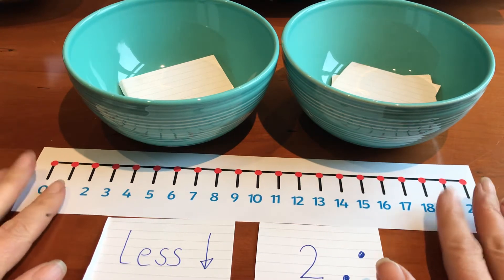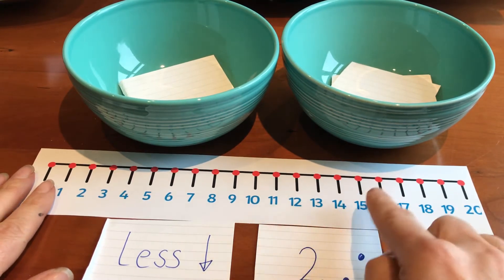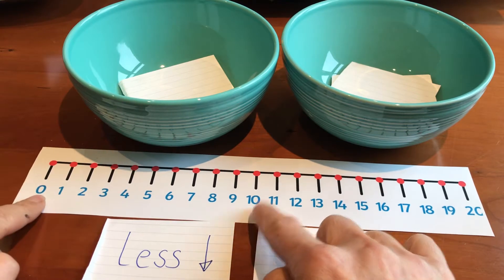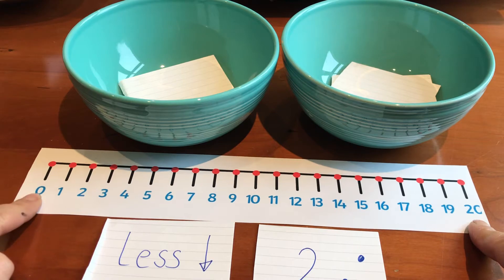Now I've got a number line. Grown-ups, you might need to write one out. I'm not sure whether the one we gave you is too small for their fingers. Do it between 1 and 10 if that's where they're working, between 1 and 20 or 0 and 20 if they're working with that, or if they're confident you can do bigger numbers.